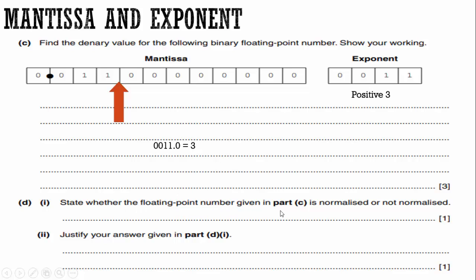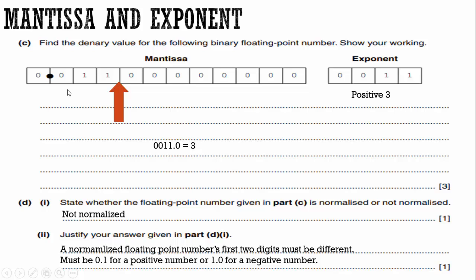Look at part D. State whether the floating point number given in part C, that's this right here, is normalized or not normalized. Well, in order for it to be normalized, it means the leading digits must be different. So we say not normalized. We pick up an easy point there. A normalized floating point numbers, first two digit must be different. Now, what you want to do is you want to be as specific as possible. You want to say it must be 0.1 for a positive number or 1.0 for a negative number. Now you may argue and say, well, that's only one mark there, but you don't want to have an examiner who writes in E, which means not enough. So just go ahead and tell them what you know, 0.1 for positive 1.0 for negative. That way, if there's any situation where they may be saying, hmm, not sure if that's enough. You go ahead and you remedy that right away.